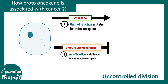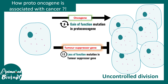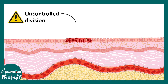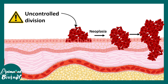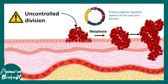Proto-oncogenes are super important for the body. Any gain-of-function mutation in proto-oncogenes or loss-of-function mutation in tumor suppressor genes would lead to uncontrolled and unregulated growth — basically cancer development. Uncontrolled cell division leads to tumor formation, or neoplasia, which can advance into carcinoma or even metastasize to other body parts.